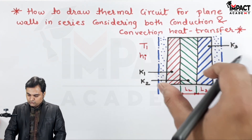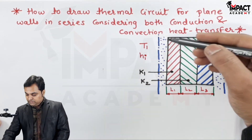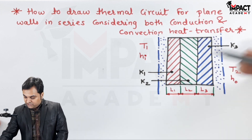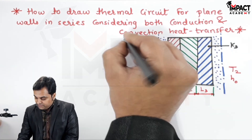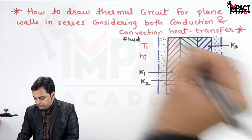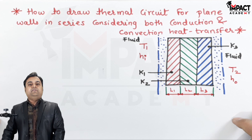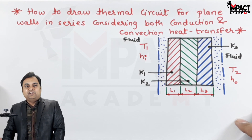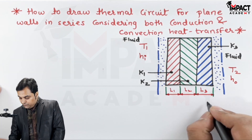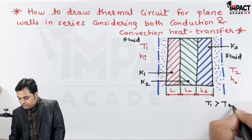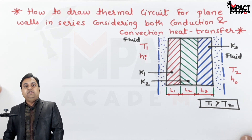This wall is subjected to fluids on both sides. The convective film on each side is because of the fluid present. On the left-hand side there is a fluid, and similarly there is a fluid on the right-hand side. Because of these fluids there will be convection heat transfer. The temperatures on both sides of the wall are T1 and T2, where T1 is assumed to be greater than T2, so heat flows from T1 towards T2.